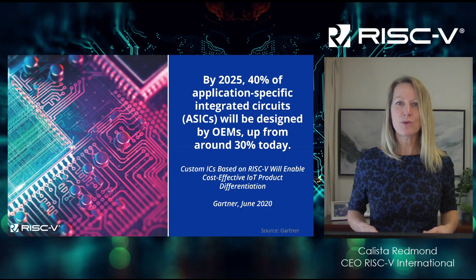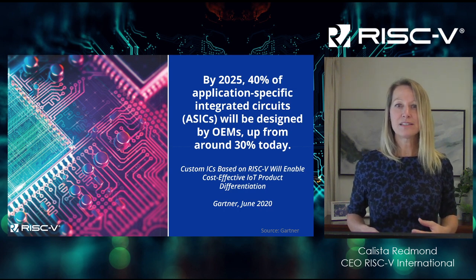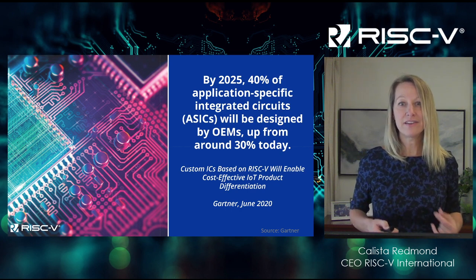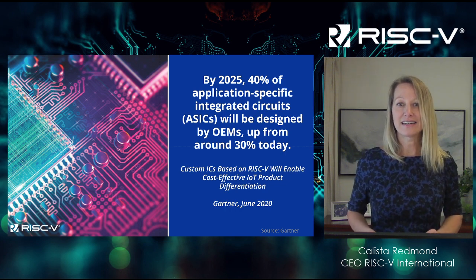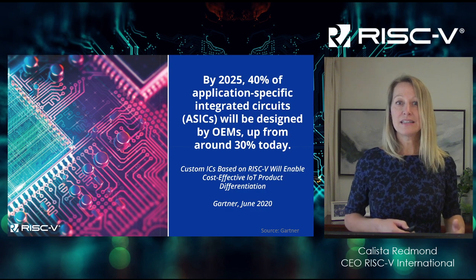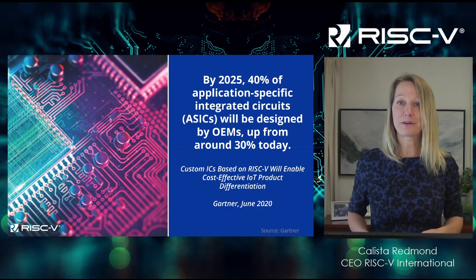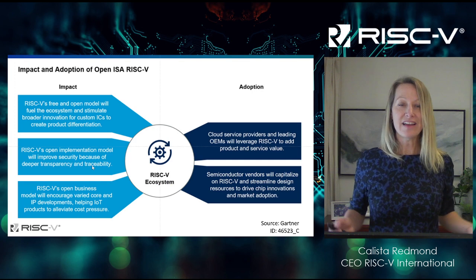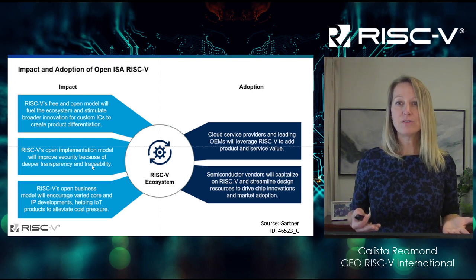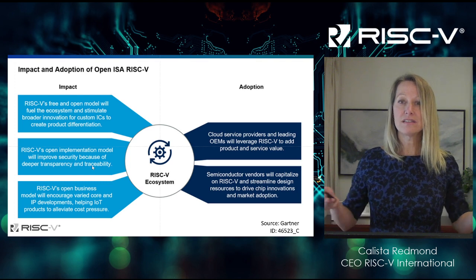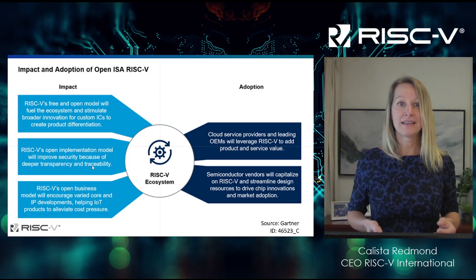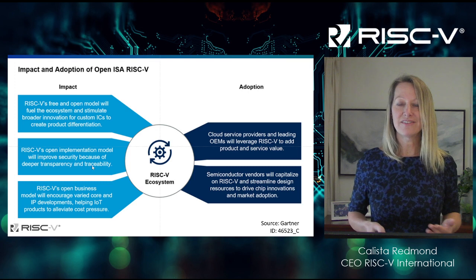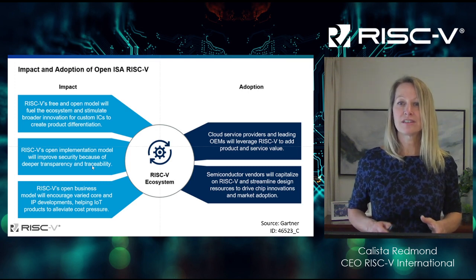Gartner specifically predicts that by 2025, 40% of ASICs are going to be designed in-house by OEMs. This is continuing to take hold across other industries. RISC-V enables that unique design element, and we're seeing it from IoT and embedded all the way through to enterprise. The first key impact is the free and open model that fuels and builds a foundation upon which you can add open or proprietary extensions, designs, and other elements. This open implementation model means that you have improved security — complete transparency and visibility of everything that goes into your product ensures greater security.